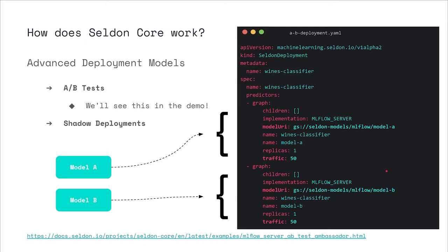Through the Seldon Deployment custom resource, you can also specify advanced deployment strategies. This is particularly relevant for machine learning because it's usually hard to say whether a model that performs well in training will correlate with the same performance in production, since you don't know how your production data will look. So you would follow strategies like deploying two models in an A/B test, splitting traffic between them, or using canary deployments. The Seldon Deployment custom resource exposes this through the concept of predictors — you can have multiple predictors, for example two of them with 50% of traffic each. All of this, plus more features, has demos and details in the Seldon docs. Feel free to ping me or join the Seldon community Slack channel with any questions.